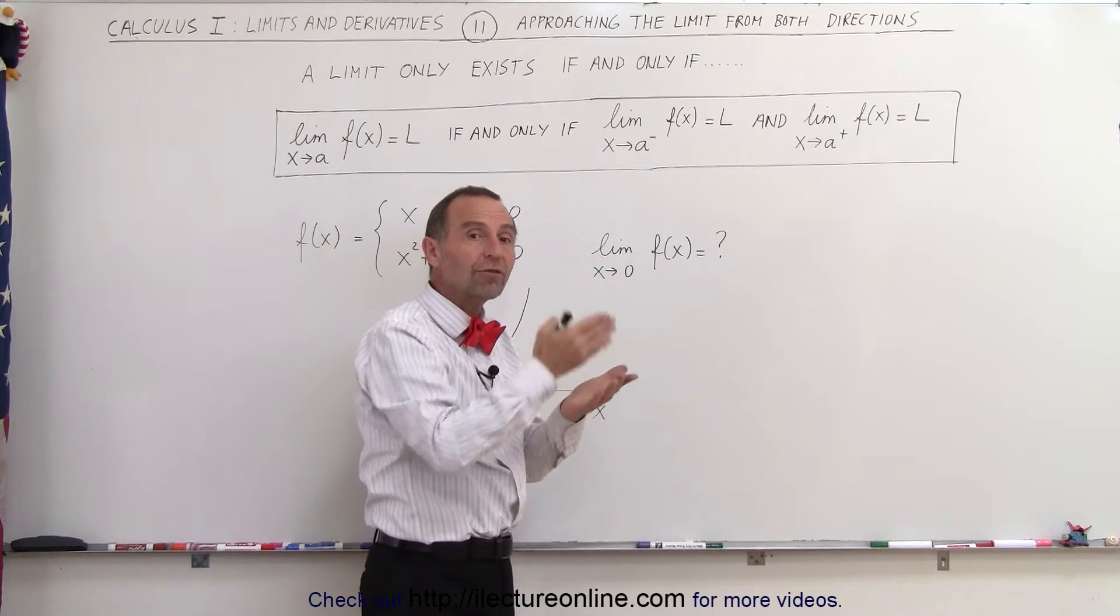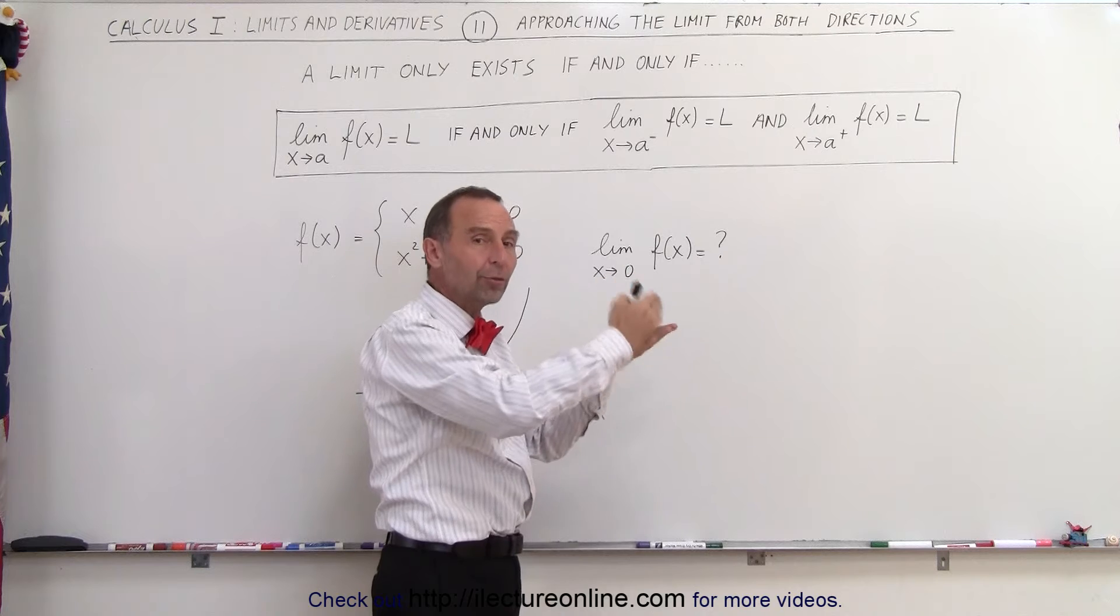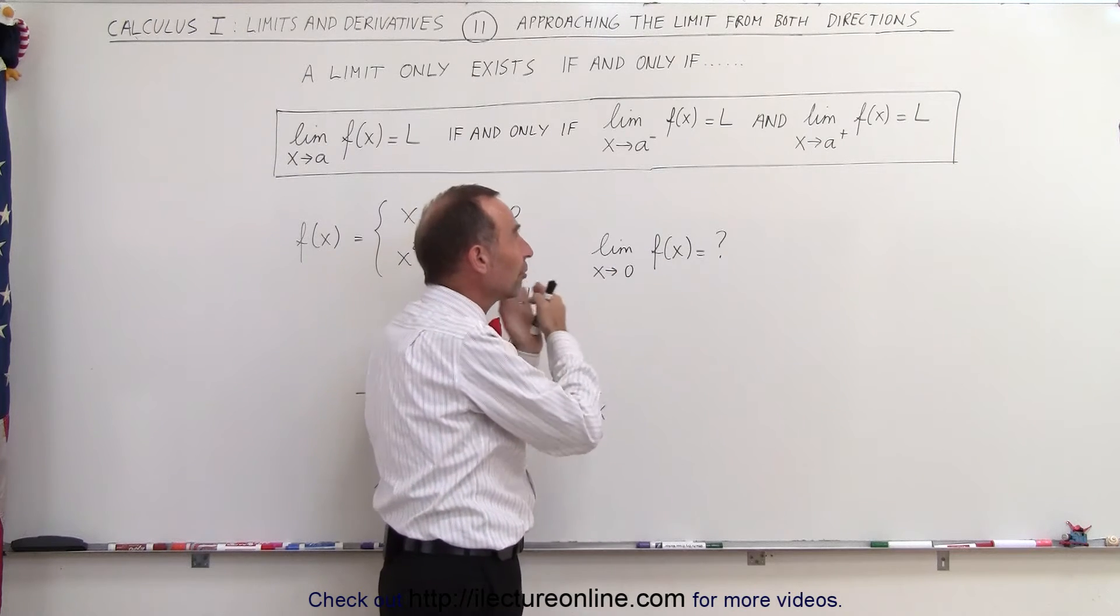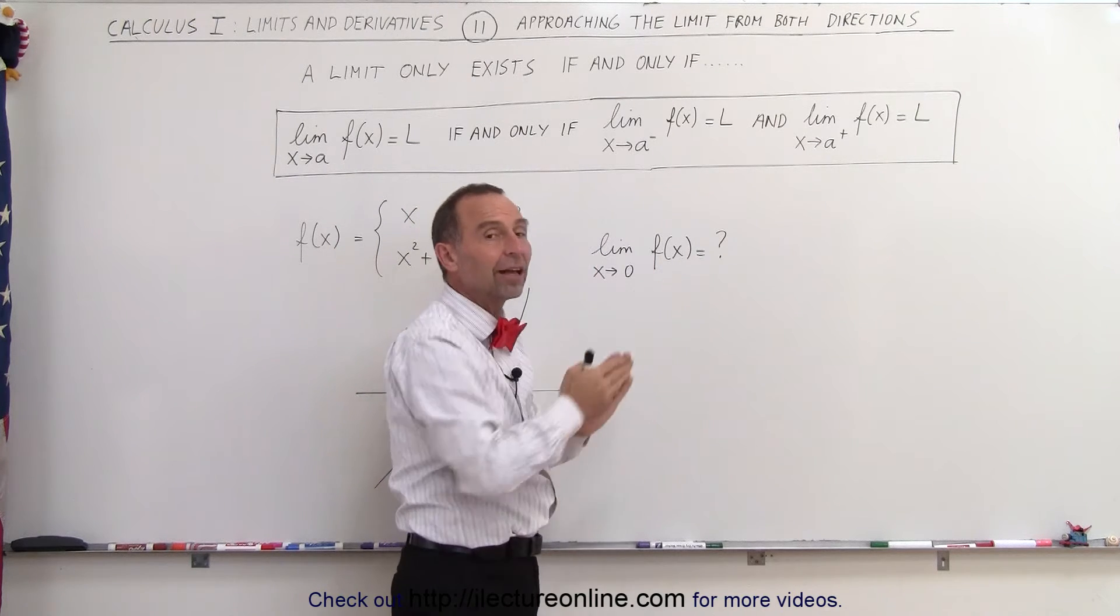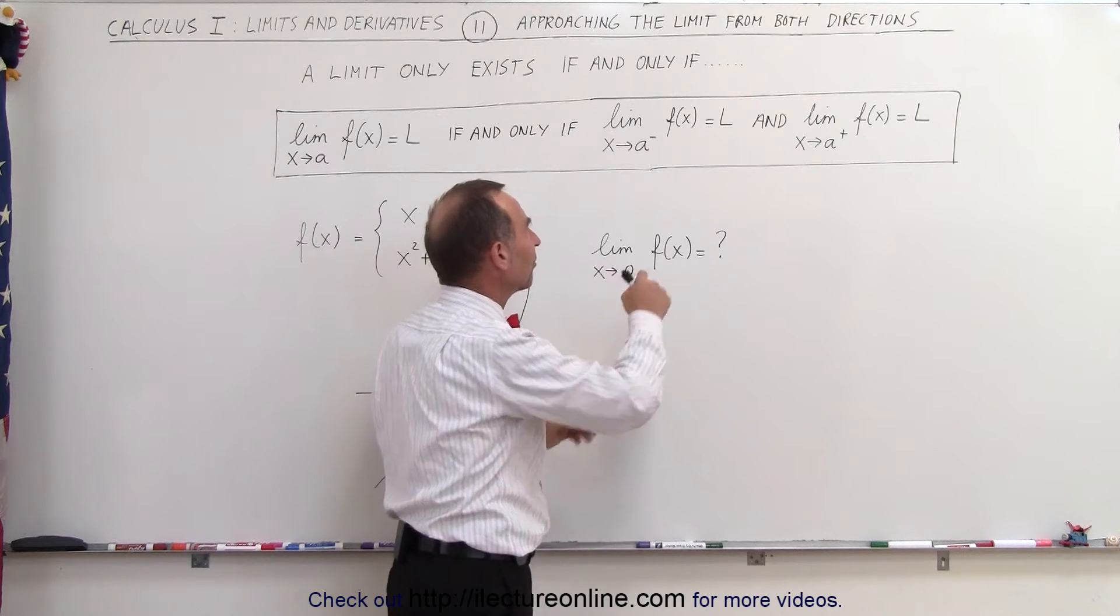So let's say if a is 3, let's start from 1, then go to 2, 2.5, 2.9, 2.99 and so forth from the left, from the negative side of that value. It doesn't have to be a negative number, but from the left side of the value.